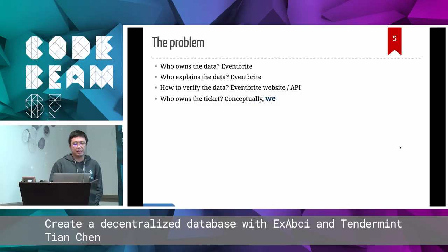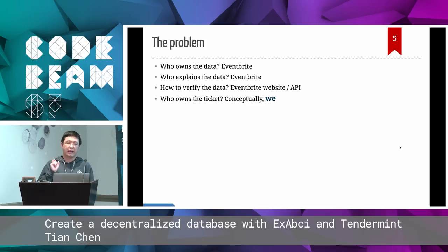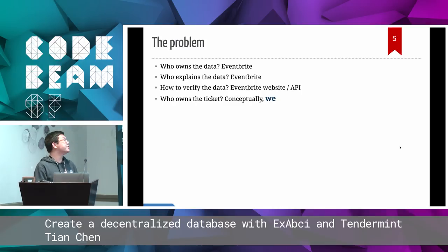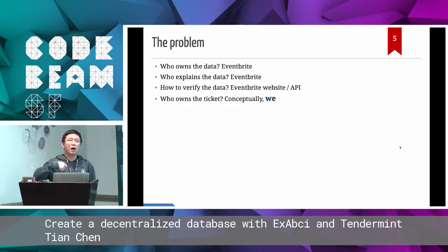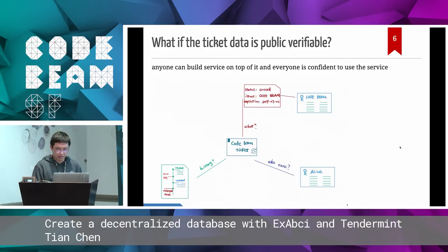The problem behind the scenes is that although you paid the money and own the ticket — a digital asset — the data of that ticket is not owned by you. It's owned by Eventbrite. Who can read the data? Eventbrite. Who can verify the data? Also Eventbrite. So even if technically you are the owner of this digital asset, you can do nothing with it — you cannot exchange it, you cannot transfer it to someone else — as long as Eventbrite doesn't provide that kind of service.